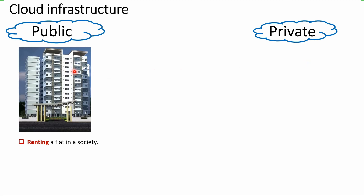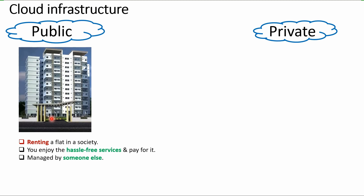As you can see here, this is a fully operating residential society which has all the amenities — all the flats where people live, a recreation area, morning jogging track, swimming pools, clubhouse, parking spaces, and everything you can think of. Renting a flat in this society is like renting infrastructure from the public cloud, where you enjoy hassle-free services and pay for what you need.